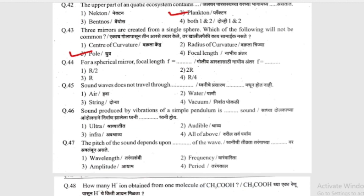For a spherical mirror, focal length f is equal to what? (Goliya arse saati nabhiya antar f kai astar?) Options: R/2, 2R, R, or R/4. The answer is R/2 — the focal length is half the radius of curvature.